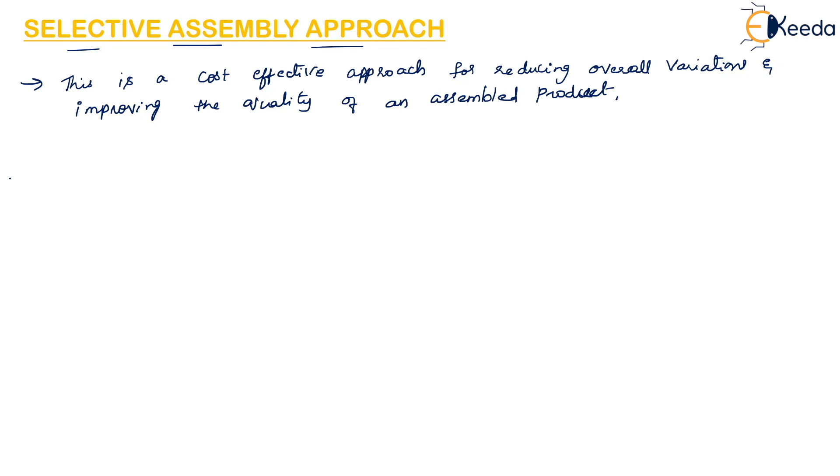Selective Assembly focuses on the fit between mating parts rather than the absolute dimension of each component.